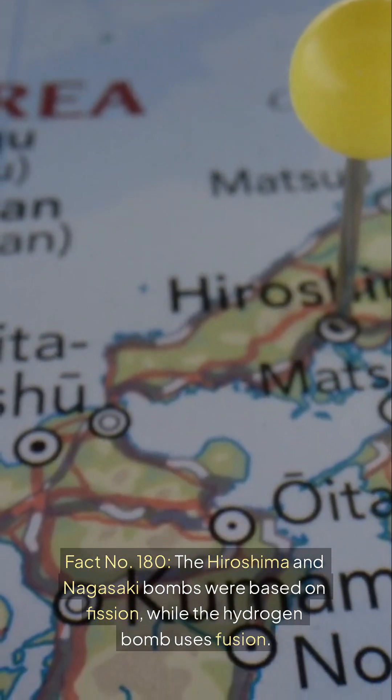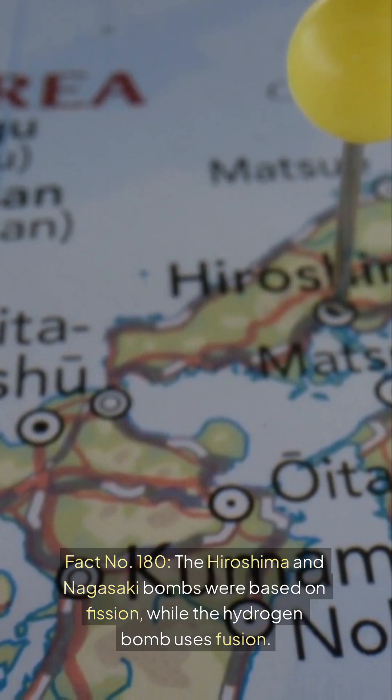Fact number 180: The Hiroshima and Nagasaki bombs were based on fission, while the hydrogen bomb uses fusion.